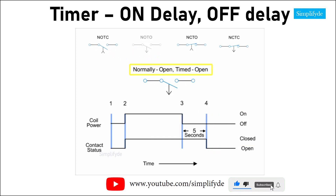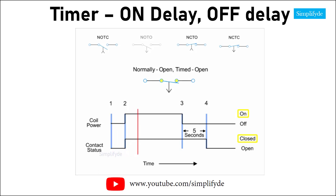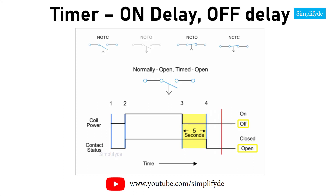Next, we have the normally open timed open (NCTO) contact. Similar to the NOTC contact, this type of contact is normally open when the coil is unpowered or de-energized, and closed by the application of power to the relay coil. However, unlike the NOTC contact, the timing action occurs after the coil is de-energized. Thus, the contacts close immediately when the coil is energized, and open five seconds after the coil is de-energized.